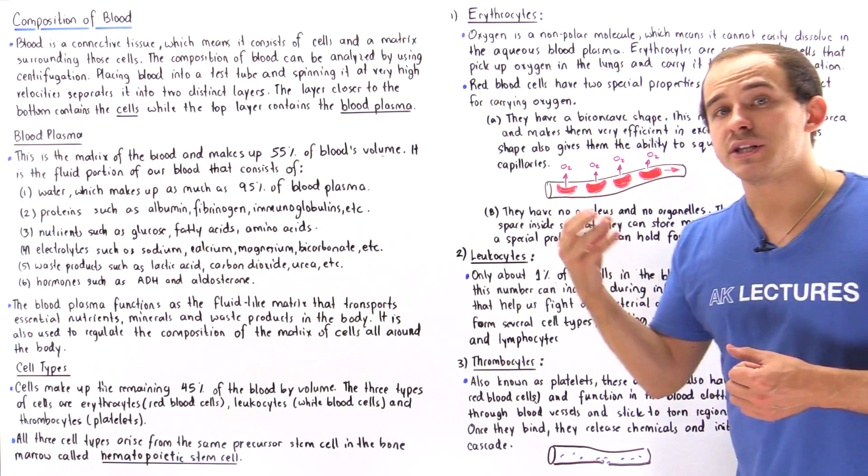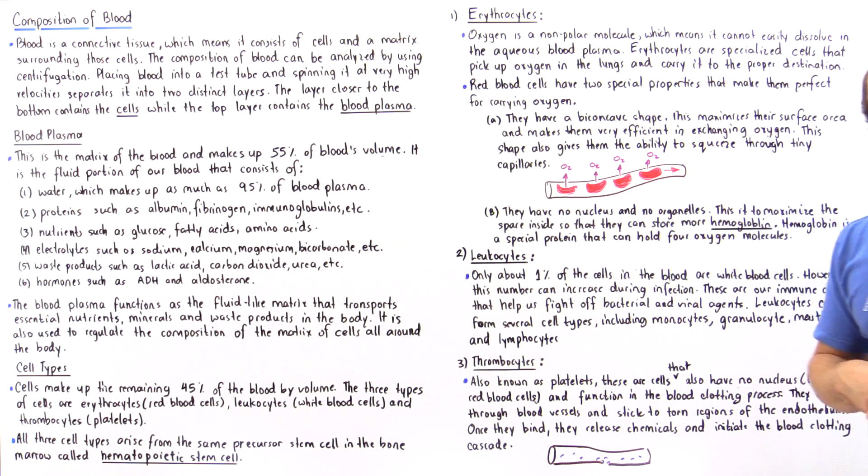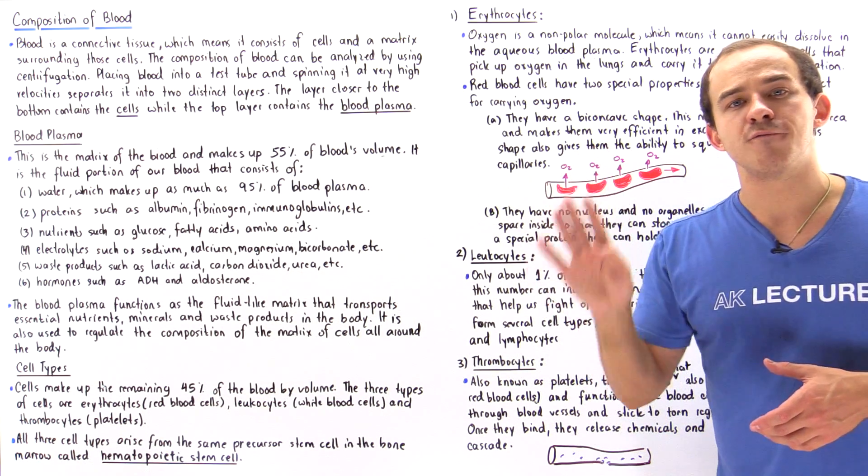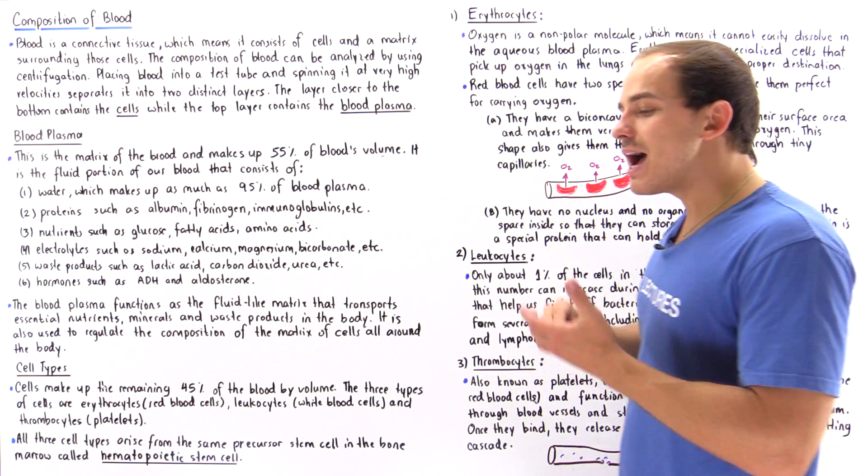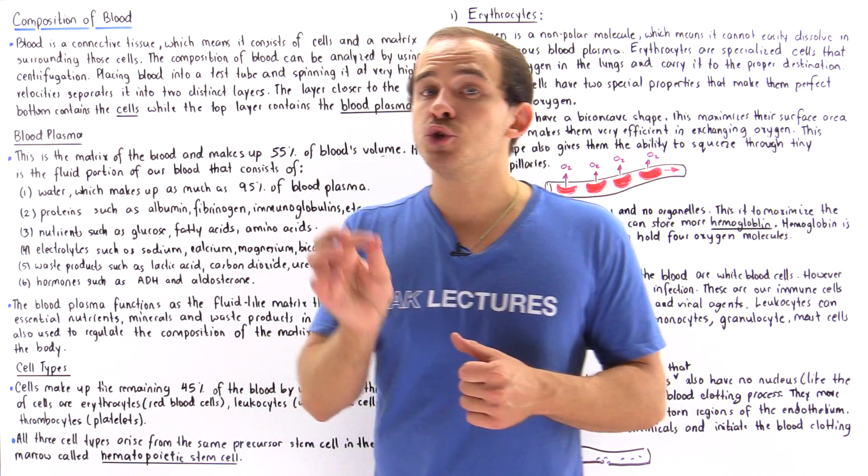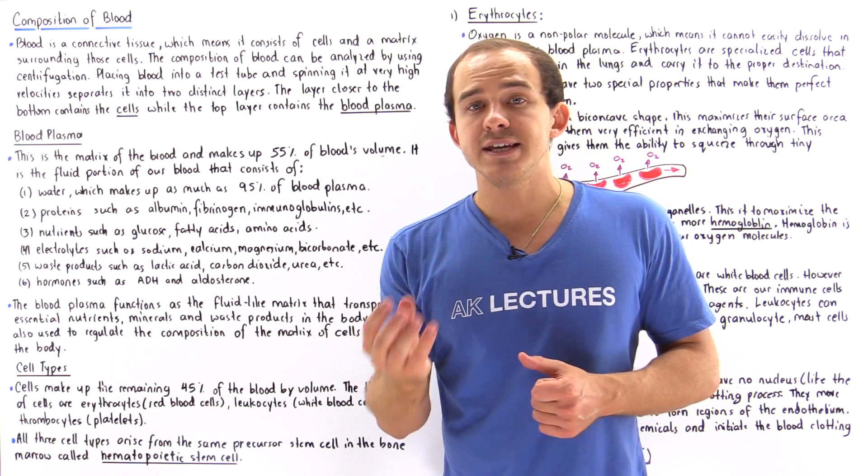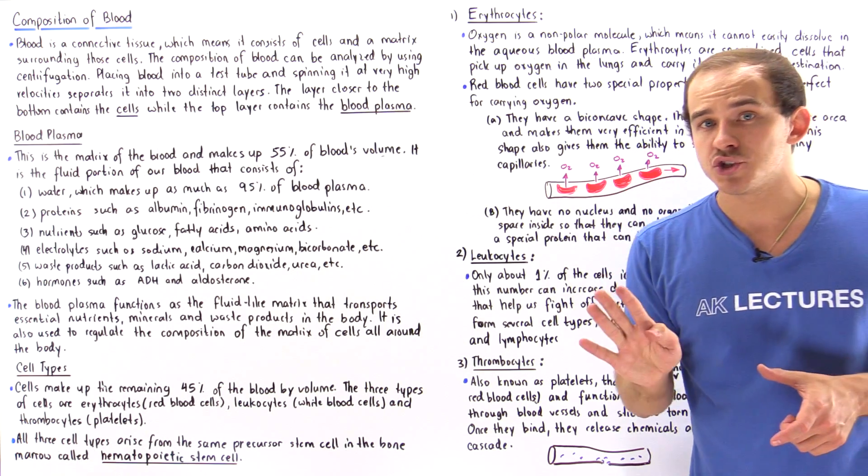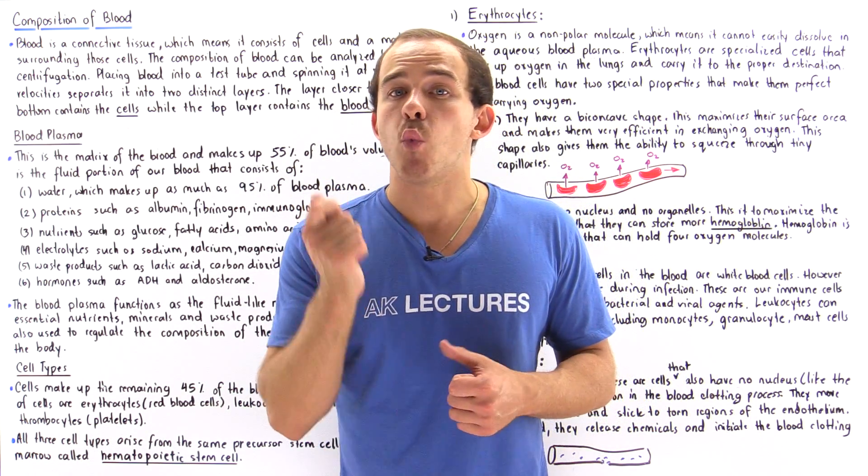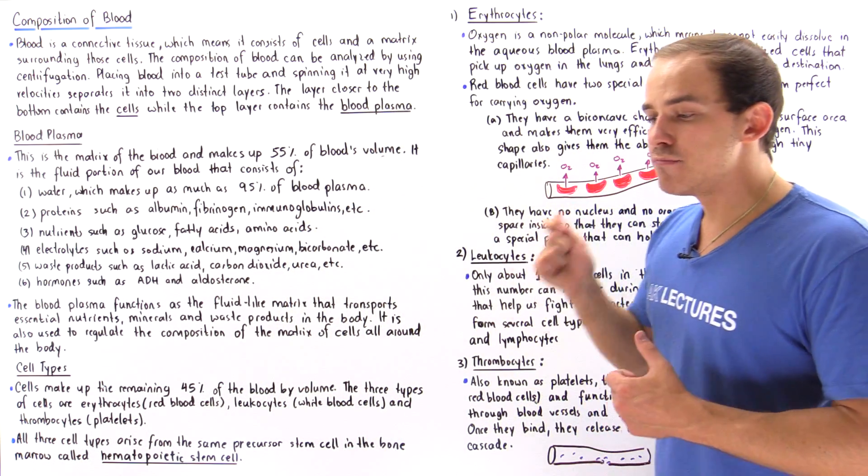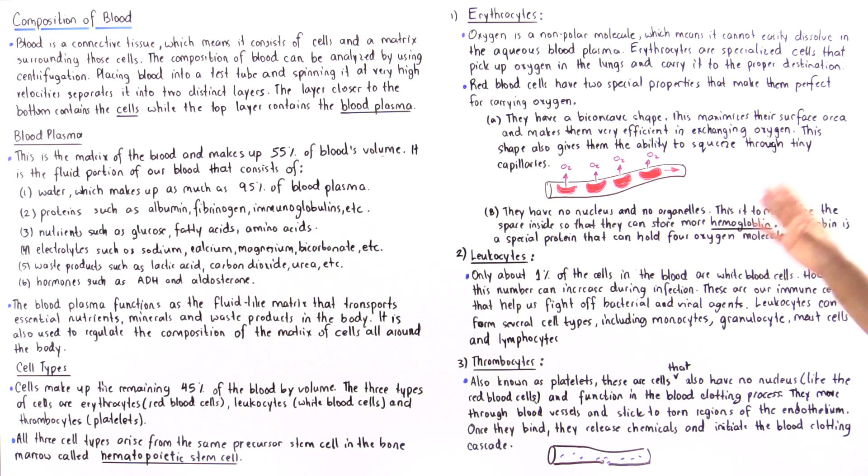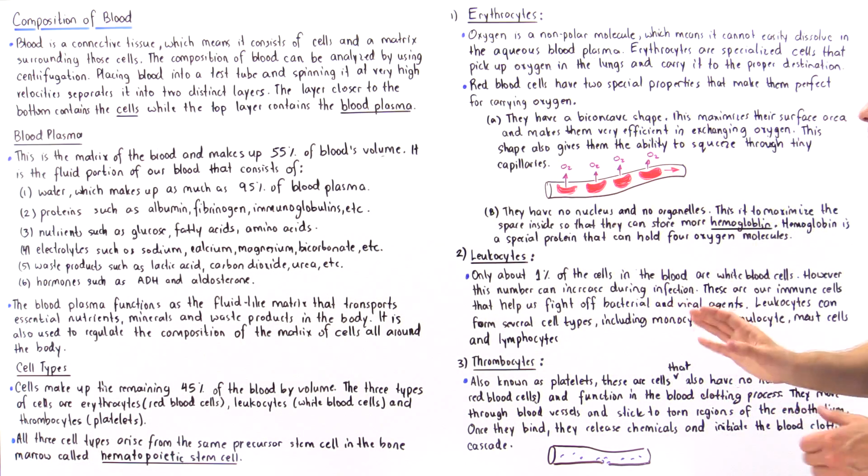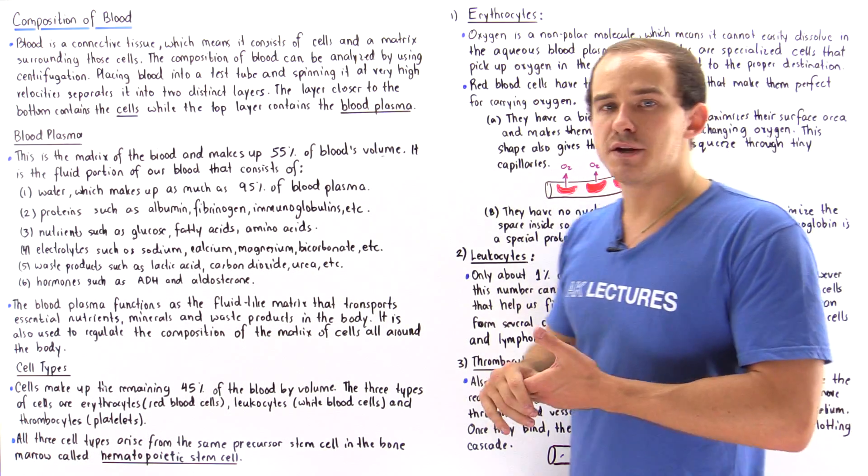Now the protein that actually carries the oxygen inside the red blood cell is a protein known as hemoglobin and hemoglobin can carry up to four different oxygen molecules. Now inside a single red blood cell, we have about 280 million of these individual hemoglobin proteins and because hemoglobin carries four oxygens, four multiplied by that gives us over one billion of these oxygen molecules is carried in a single red blood cell.